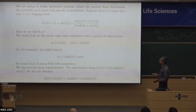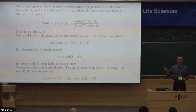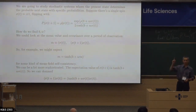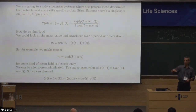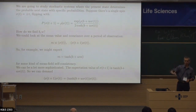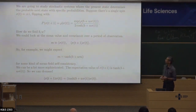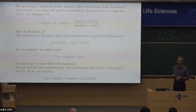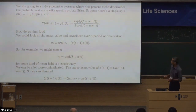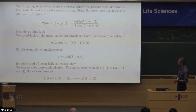We're interested in observing stochastic systems where spins take values plus one and minus one. There's a vector of these spins and we observe them flipping up and down over time — time step one, time step two, and so on. These spins are flipping probabilistically, and what we're trying to do is figure out what interactions between the spins are making them flip stochastically.